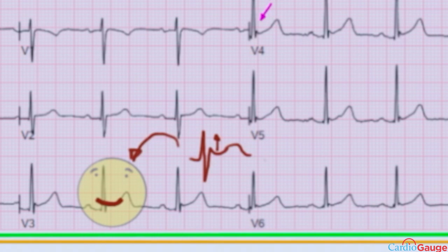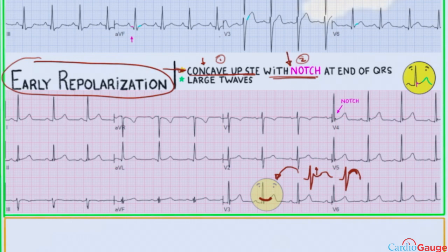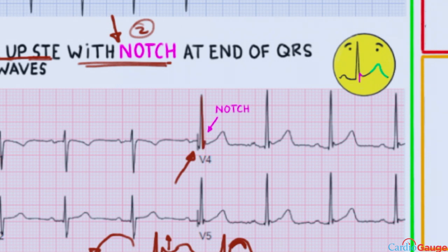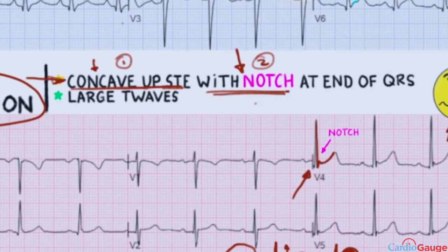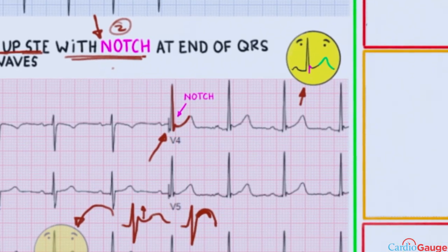Concave down would look like a frowny face — because that's a heart attack. The notch at the end of the QRS is a little part where it goes up and down really quickly, and I've put that on the face illustration. The third part you'll see is oftentimes large T waves, which would go along with early repolarization.